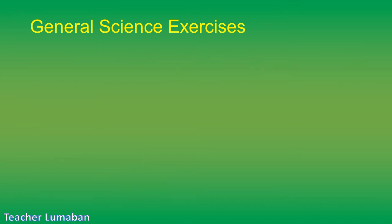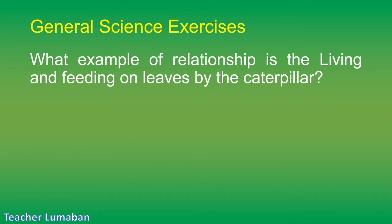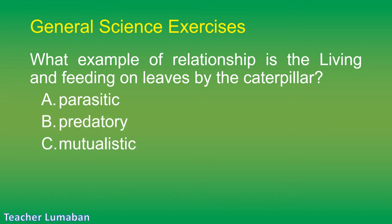What example of relationship is the living and feeding on leaves by a caterpillar? Letter A: parasitic. Letter B: predatory. Letter C: mutualistic. Letter D: competitive.